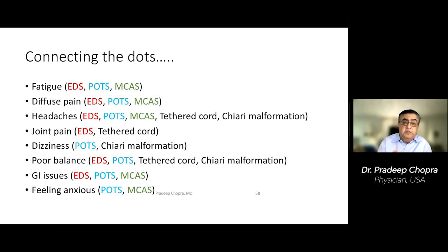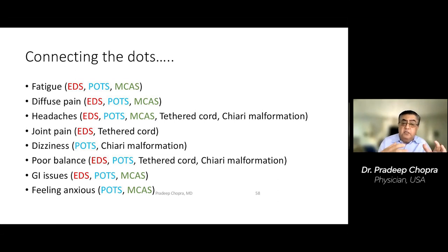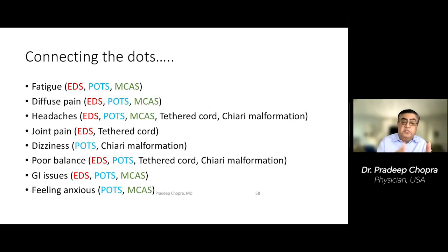Joint pain can be seen in mast cell and tethered cord syndromes. GI issues can cause POTS, mast cell pain, and nutritional decline. That feeling of anxiety — often misdiagnosed — can be caused by POTS or mast cell activation syndrome. In fact, mast cell activation syndrome can also make POTS worse. There's no one single explanation for a lot of these symptoms; there's a combination, and one has to treat each one at a time.